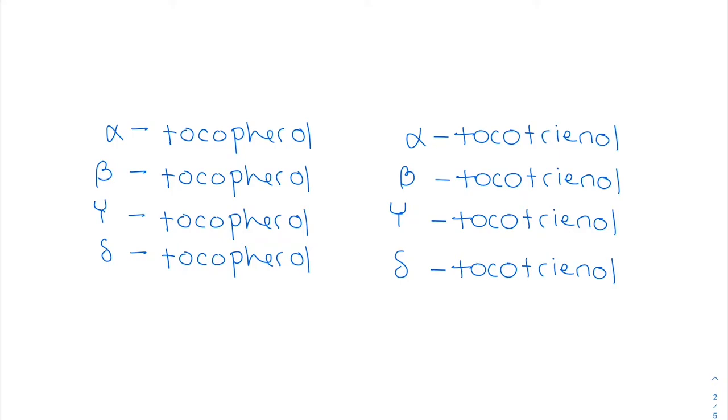Alpha tocopherol, beta, gamma, delta. Same for alpha tocotrienol, beta, gamma, delta. There you go. So this alpha tocopherol is our most biologically active form of vitamin E. This is the big one.